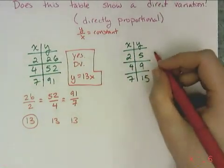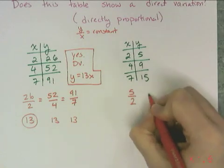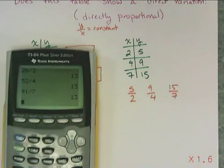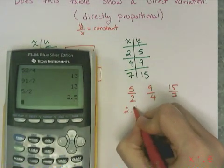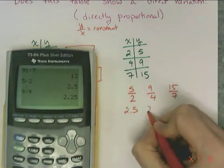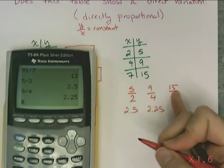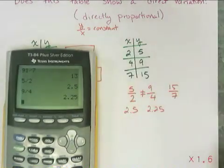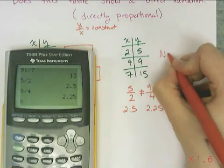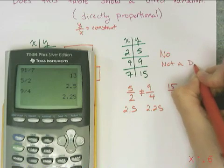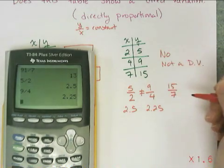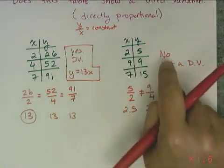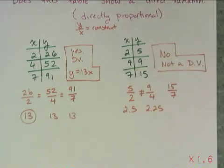If I check these points: 5 over 2 gives 2.5, and 9 over 4 gives 2.25. There's really no point checking the last one because these two are already not equal. Therefore y and x are not directly proportional to each other, so this is not a direct variation. All I know right now is that this is not a direct variation because y over x is not constant.